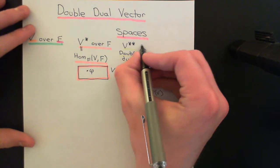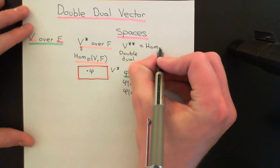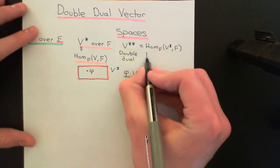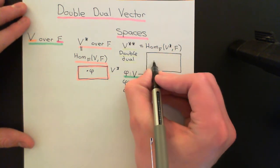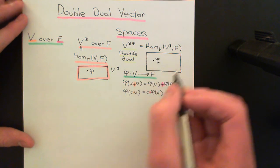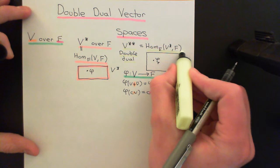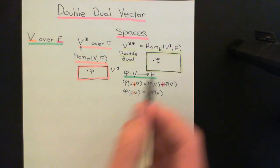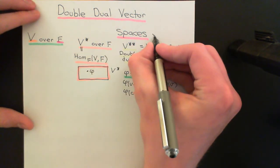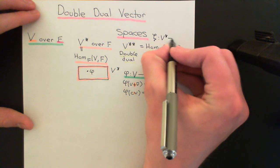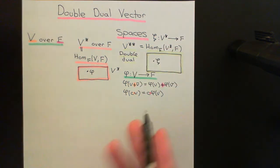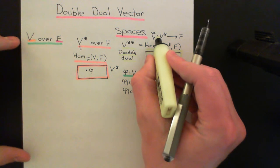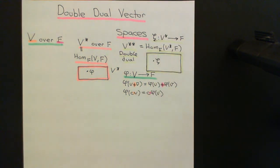As a set, V** consists of all homomorphisms over F from V* to F. Its elements — which I'll call zeta, coloured yellow — are linear maps from the dual vector space V* into the field F. So zeta maps V* into F, and these must be linear maps, making them homomorphisms of the dual vector space onto the field F. That is the definition of the double dual vector space.